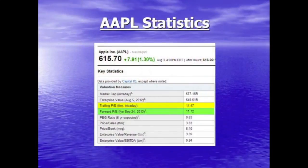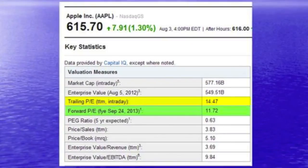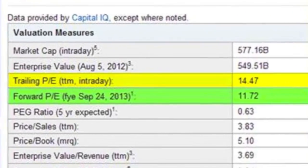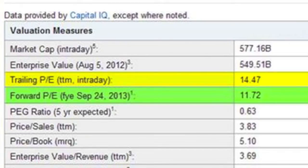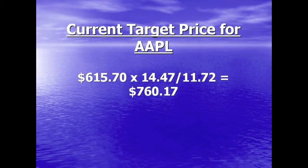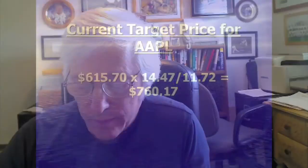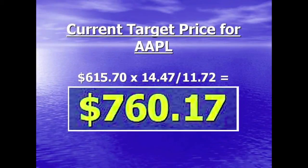You alluded to Apple Computer, so let's go to Yahoo Finance and take a look at the statistics for Apple Computer. As you can see from the screen, Apple has a trailing P.E. of 14.47 and a forward P.E. of 11.72. So let's plug those figures into the equation at the current price of Apple Computer at $615.70. We multiply that current price by 14.47, the trailing P.E., divided by 11.72, the forward P.E., and that gives us a future or target price for Apple Computer of $760.17.